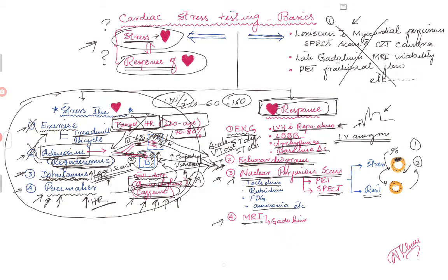Last but not least, you can also do MRI. Gadolinium late enhancement can show whether the patient had a previous MI or has viable myocardium. Some centers use exercise MRI, though it may be uncomfortable as patients must hold their breath and it is a longer test. MRI provides a lot of information beyond perfusion — including infiltrative heart diseases, iron deposition, ejection fraction, and valve pathology as well.